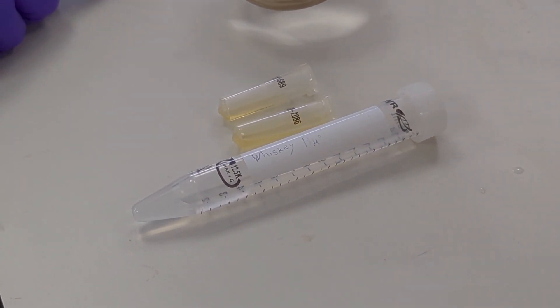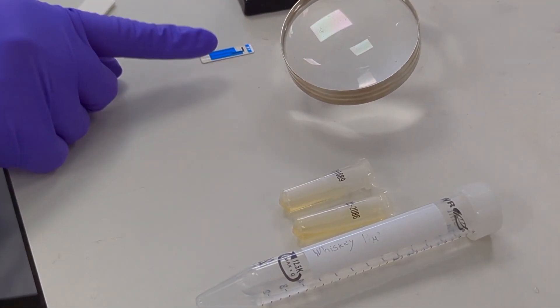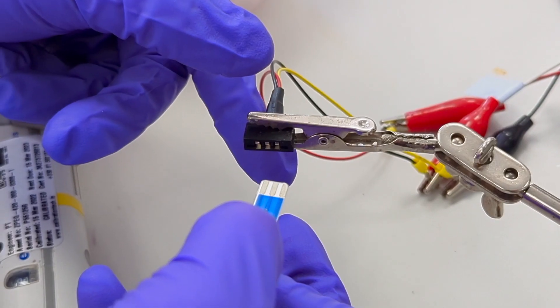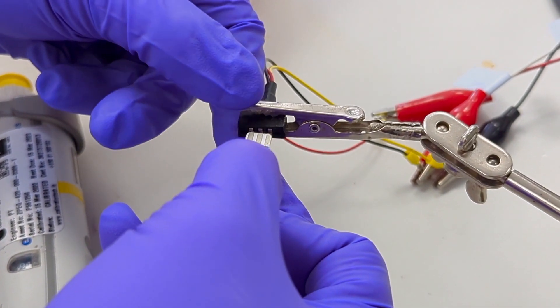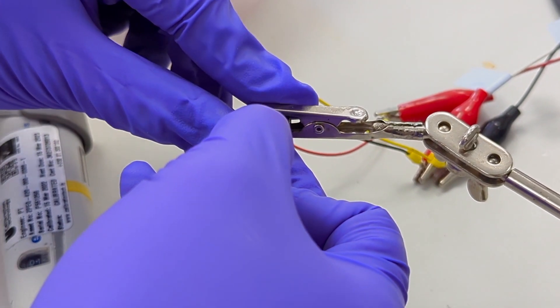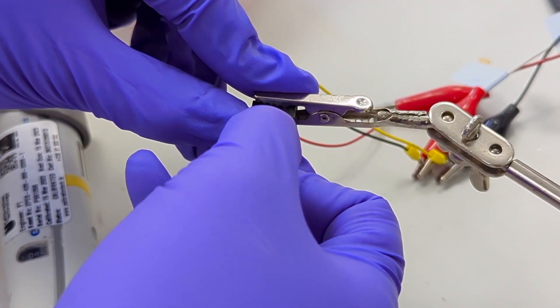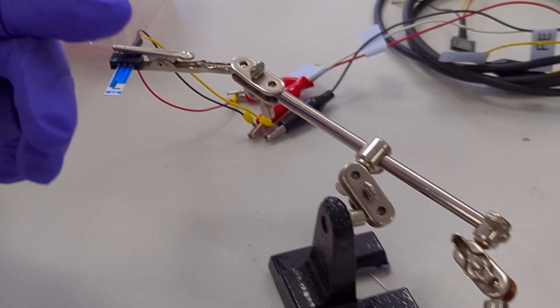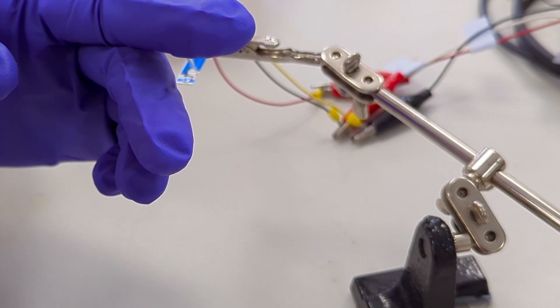We will be using our SPCE sensors to test the whiskey. Now I'll insert the sensor into the connector, making sure that the contacts are correctly aligned. Now I'm going to wet the sensor surface with a buffer to allow the sensor to stabilize.